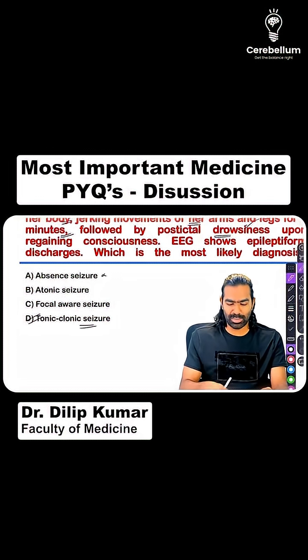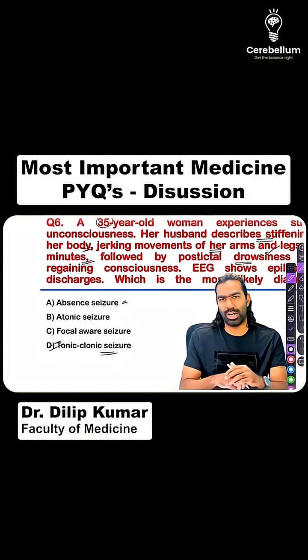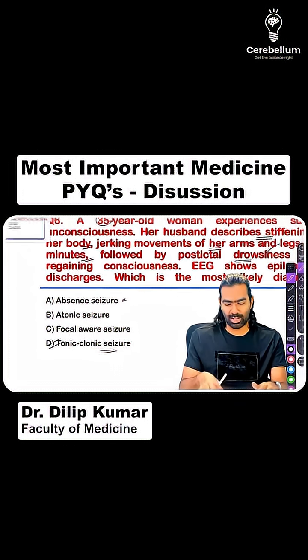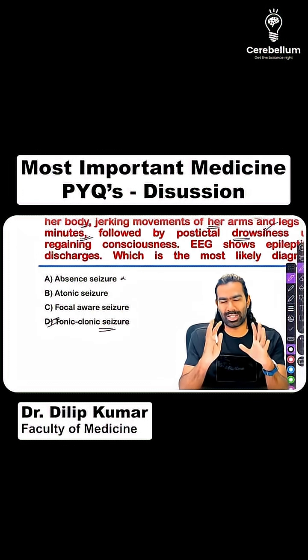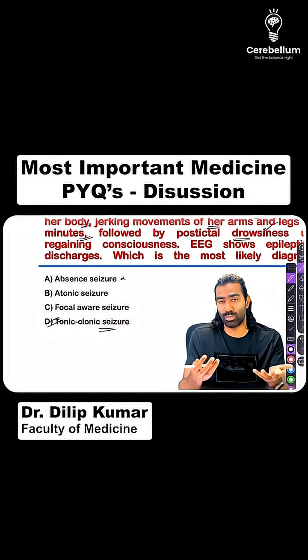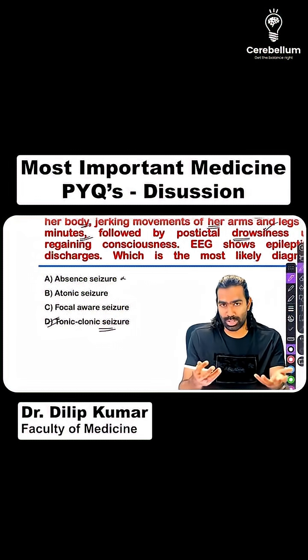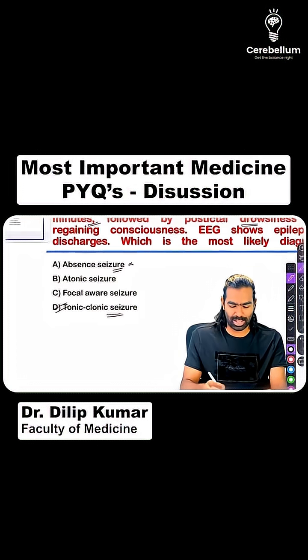Absent seizures typically tend to occur in children, not in adults. They come with a transient stare or a transient loss-of-consciousness-like picture, but the patient will not fall down. There will be no loss of postural tone and no post-ictal state. So, that's unlikely in this case.